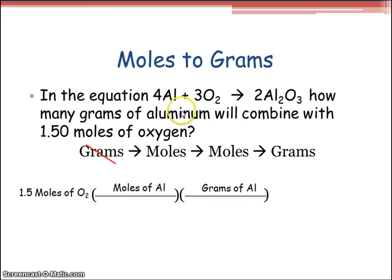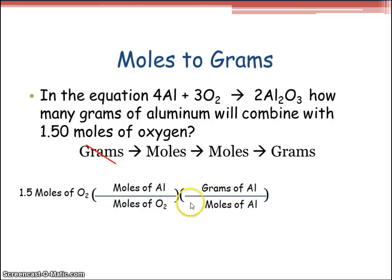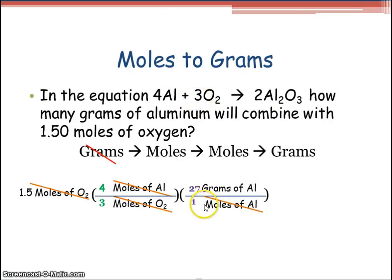Bring the units down: moles of O₂ goes downward, and moles of Al goes downward, because it's what you need over what you have. For moles to moles, look at the chemical equation: moles of Al equals 4, and moles of O₂ equals 3. When comparing moles to grams, look at the periodic table: for every one mole, I have 27 grams of aluminum. Multiply everything across: 1.50 × 4 × 27 = 162, divided by 3 on the bottom, which gives 54 grams of aluminum.